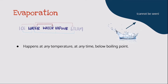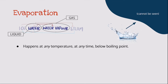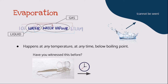Next, evaporation. When liquid water gains heat to form water vapour, which is at gaseous state, we say that a change of state has occurred. However, it is important to realise that evaporation occurs at any temperature, at any time, below the boiling point. Because at the boiling point, when water is converted into water vapour, we say that boiling has occurred, not evaporation. Have you witnessed this before? When you accidentally spill water onto the ground, after some time, the ground becomes dry. That's because the liquid water has converted into water vapour which exists in gaseous state.